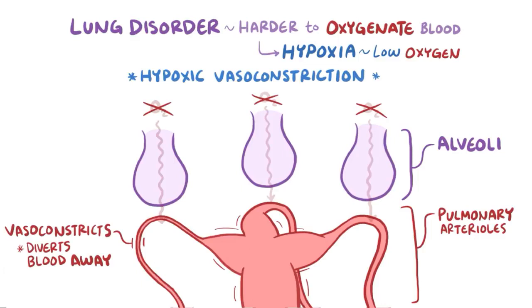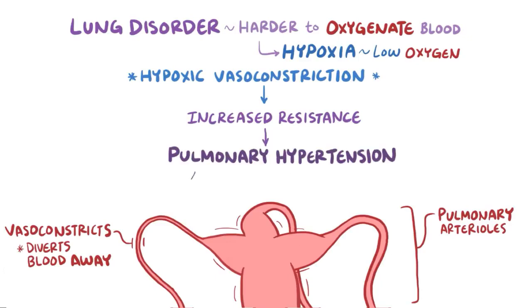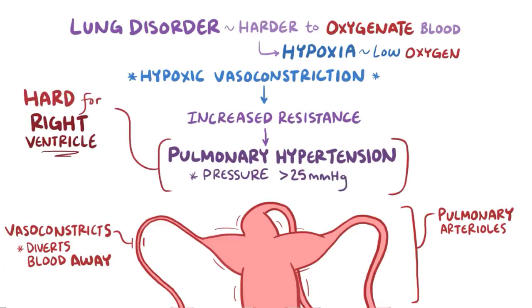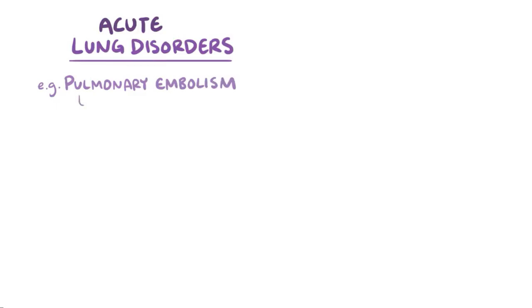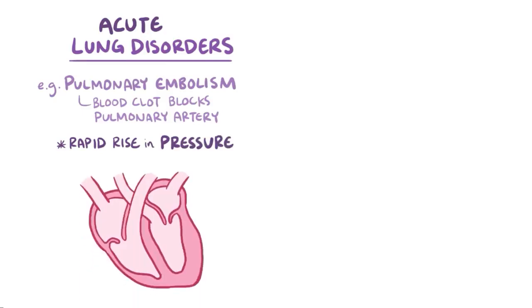When lots of arterioles vasoconstrict together, there's an increase in resistance and this leads to pulmonary hypertension, which is when the pulmonary blood pressure rises above 25 mmHg. The high pulmonary pressure makes it hard for the right ventricle to pump blood into the pulmonary circulation. In acute lung disorders like a pulmonary embolism, where a blood clot blocks blood flow to the pulmonary artery, the result is a rapid increase in right ventricular pressure that makes the right ventricle stretch out like a water balloon.